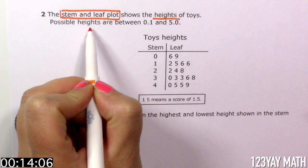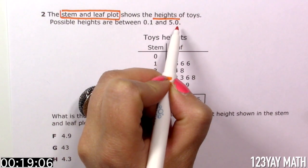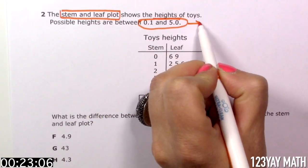Possible heights are between 0.1 and 5.0. Very important, guys, here I see decimals.